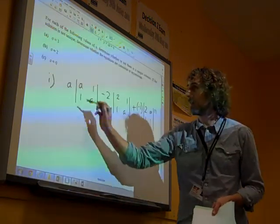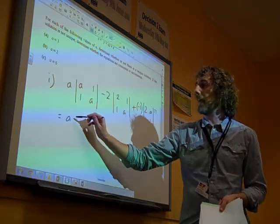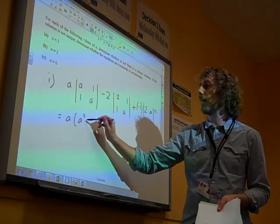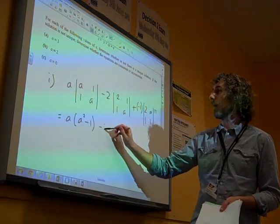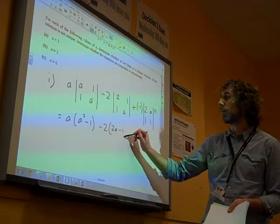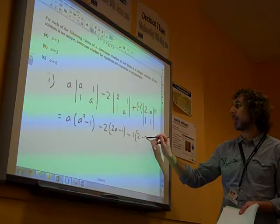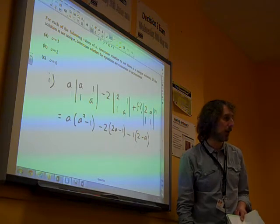Now we can work this out. That's A times A squared minus one, minus two times 2A minus one, minus one times two minus A. That's where we are.